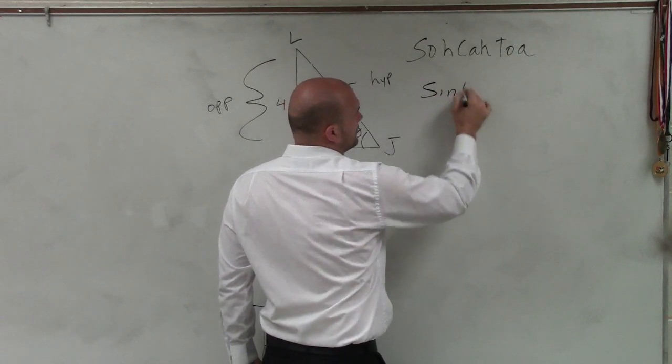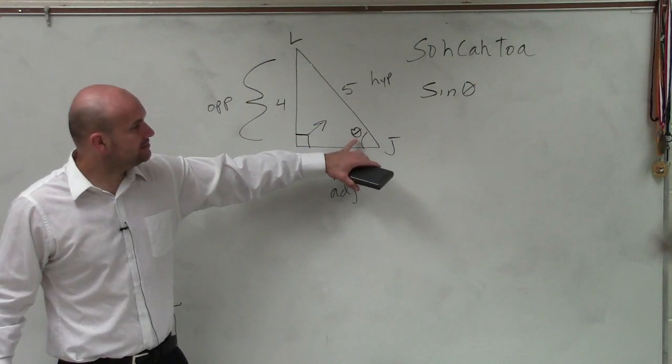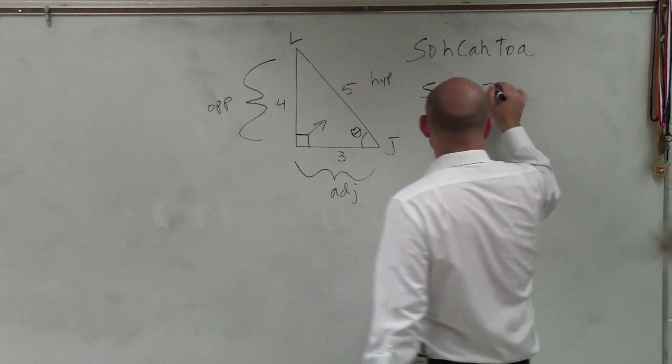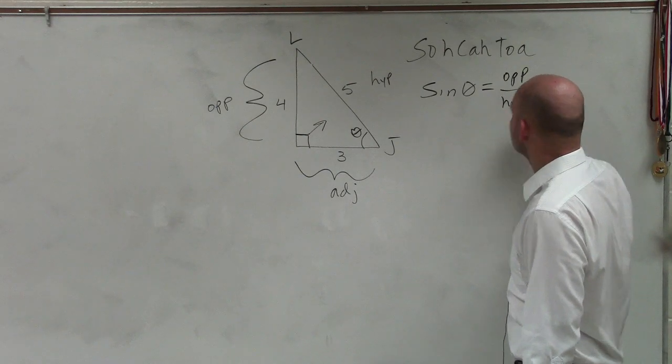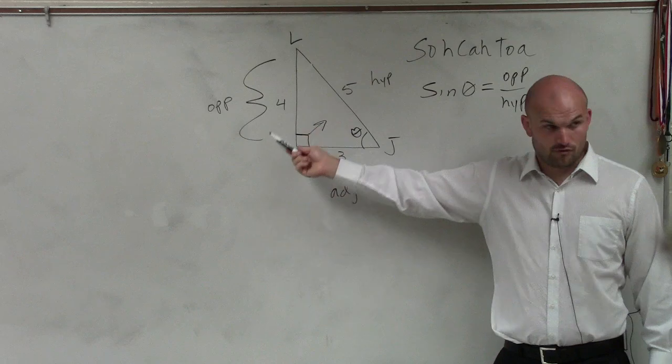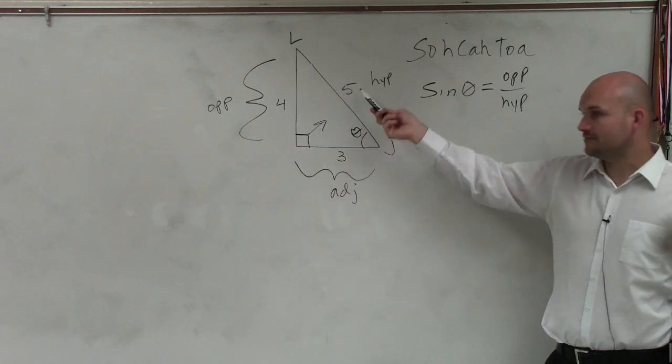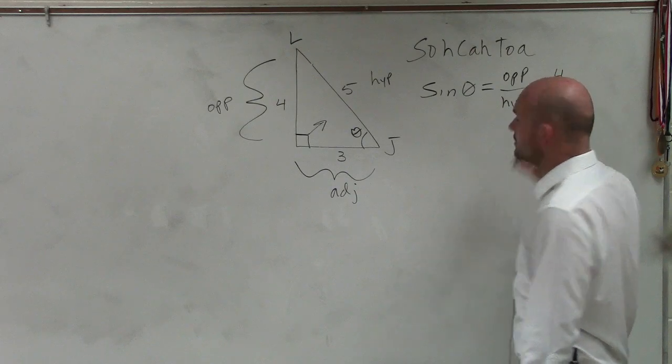So sine of an angle theta is opposite over hypotenuse. So we look at this triangle. What is my opposite side? 4. What is my hypotenuse? 5. So the sine of theta is 4 over 5.